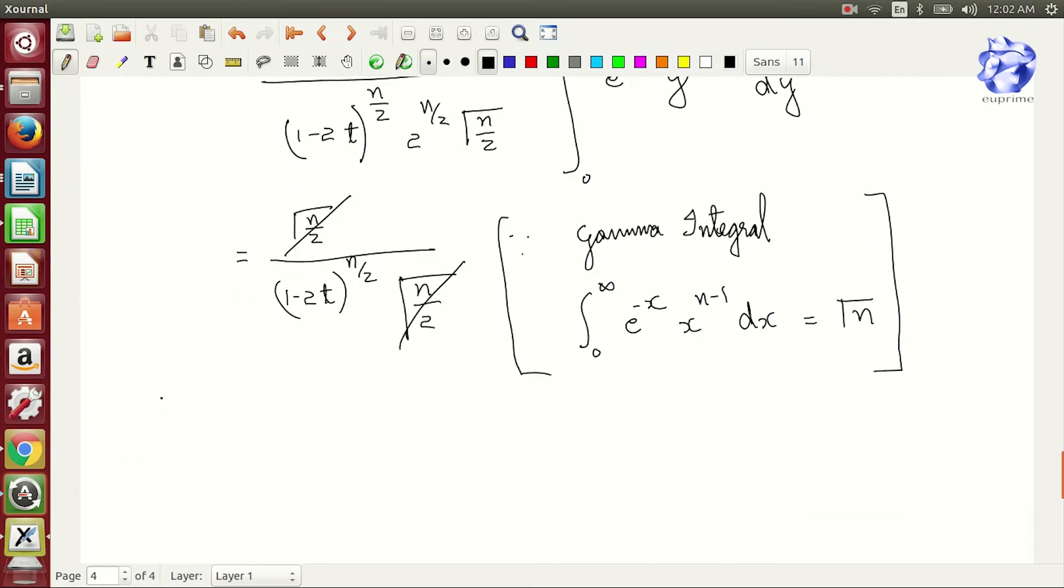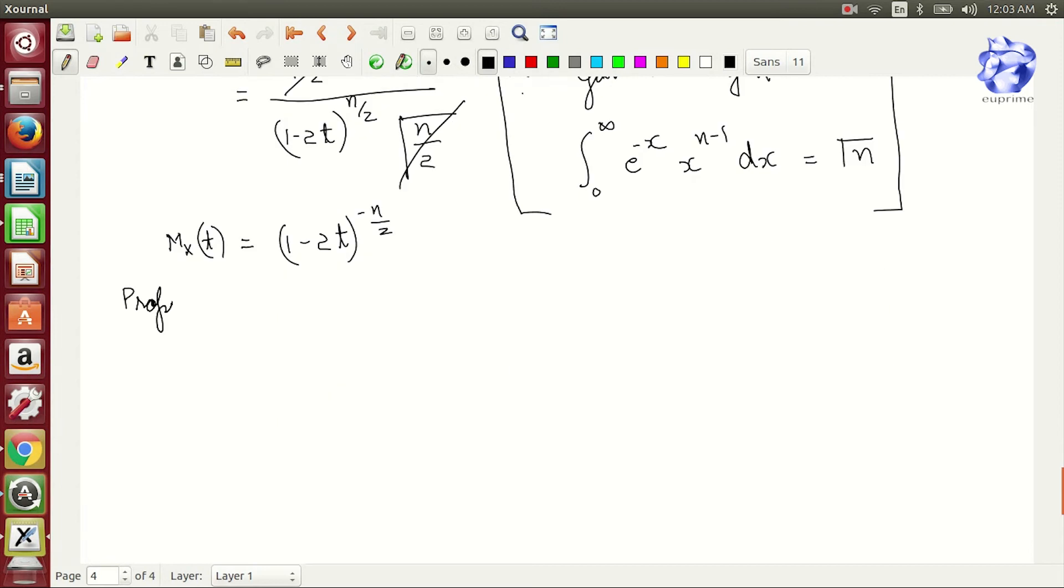Right now we will talk about the properties. The first property is that the sum of independent chi-square random variables is a chi-square random variable.